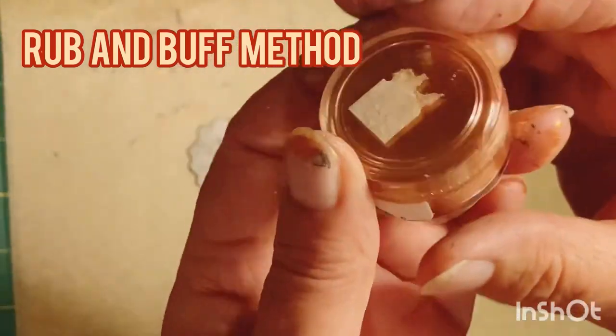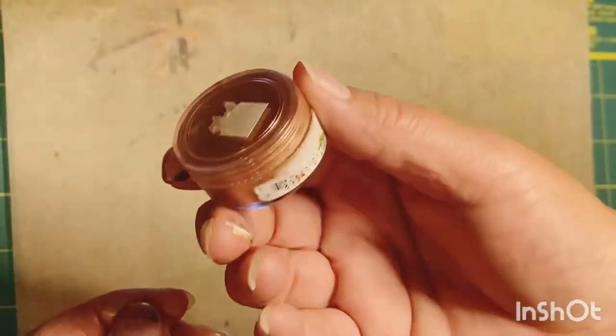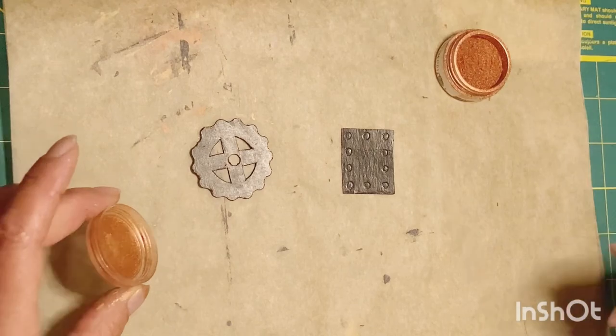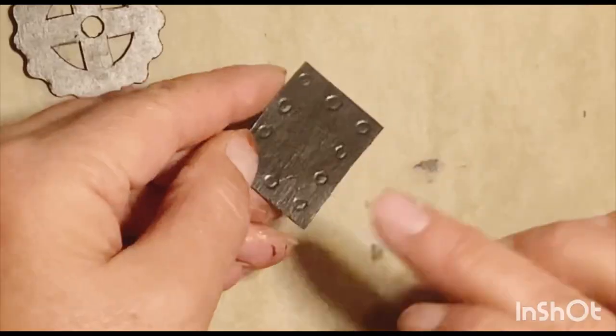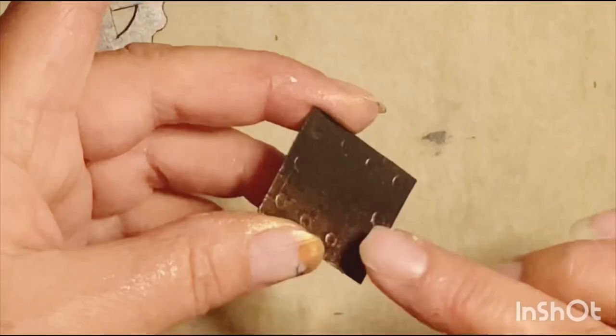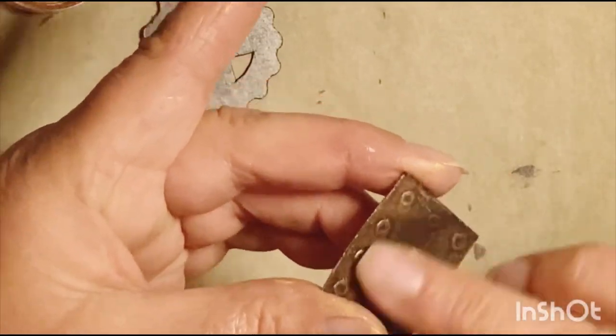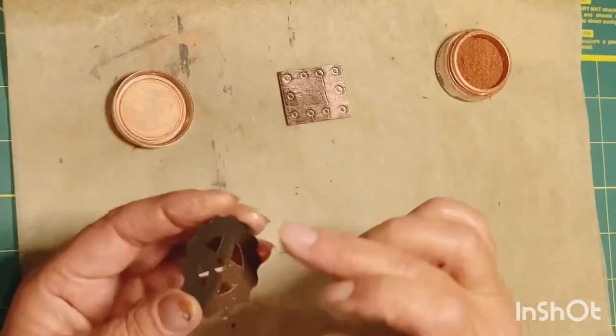Another way is a rub-and-buff method. I've only got a copper rub-and-buff powder at the moment, but this is probably my favorite method. And you just rub that on before your black paint is 100% dry.